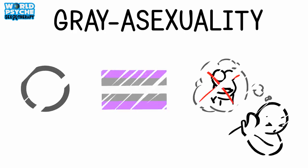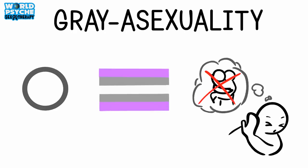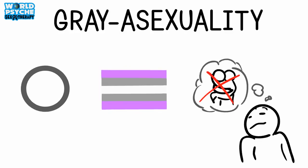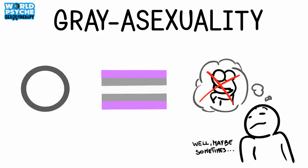7. Grey Asexuality. This is similar to the previous sexuality. However, instead of never experiencing sexual attraction, someone who is greysexual may very rarely experience sexual attraction. They are still valid under the asexuality umbrella, despite occasionally experiencing sexual attraction.